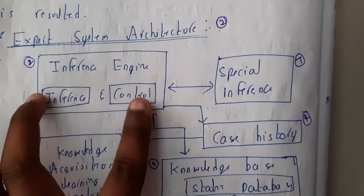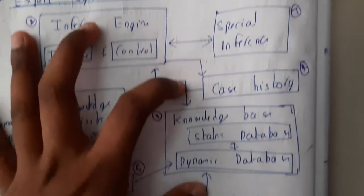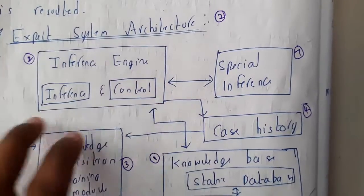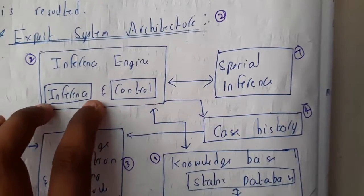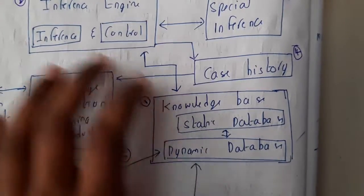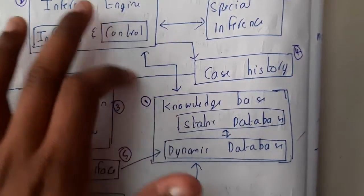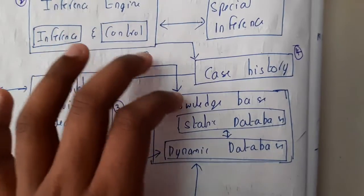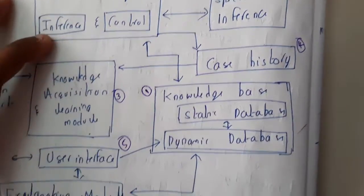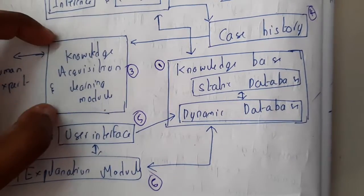The next thing is the inference engine. It is how you access the data in the knowledge base — only through the inference engine. That's why it handles inferences and control, controlling the database. There should be direct communication between these two, which is why we have double arrows connecting them.